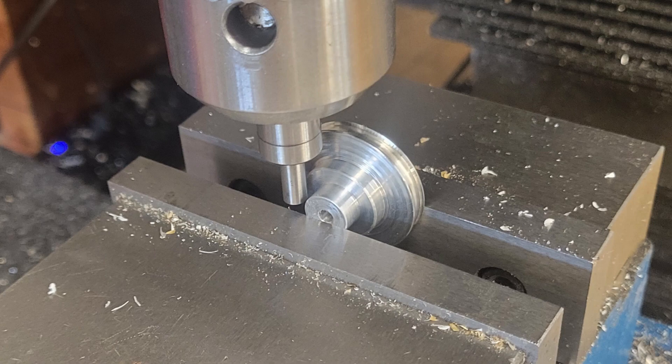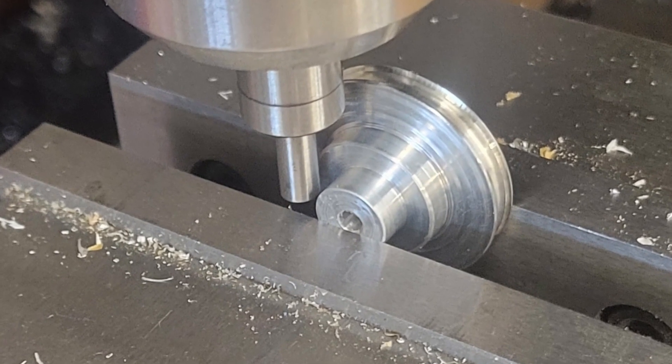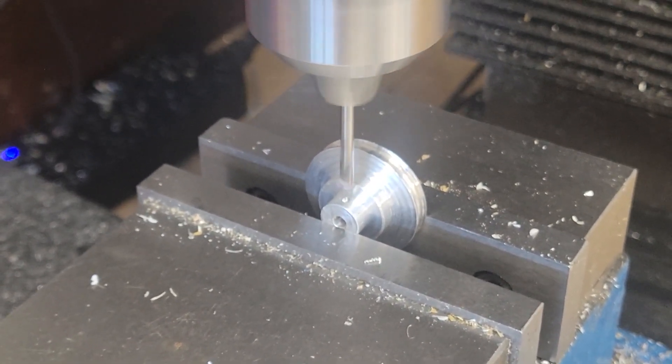The final operation after some cleanup of our pulley is to drill and tap the hole for the set screw. We use an edge finder to find the center and then we center drill, drill, and tap.